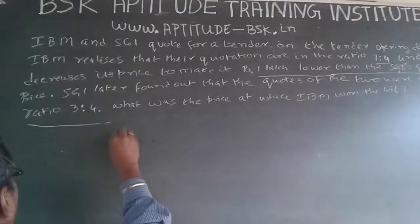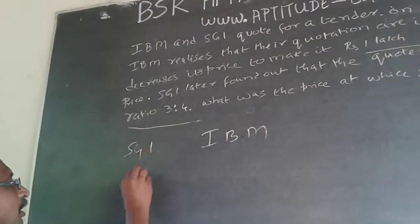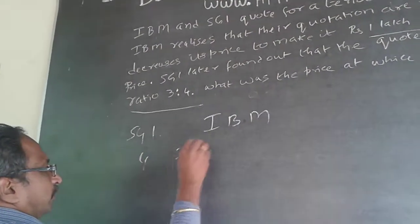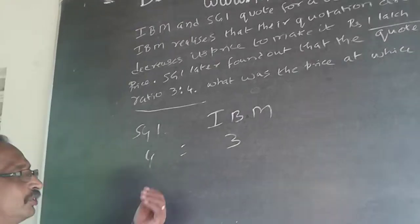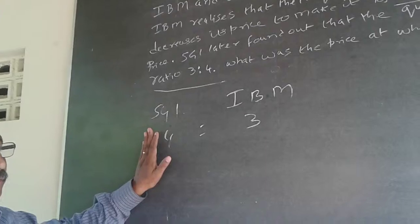Here, the ratio of IBM and SGA is 4 is to 3. The ratio will always be maintained. Whenever I talk about ratio, ratio will always be maintained.